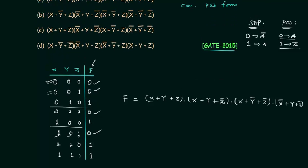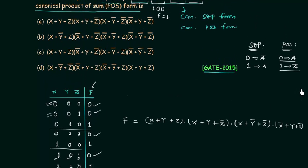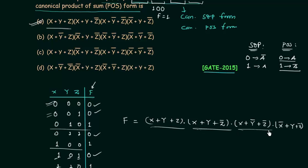Now let's choose the correct option. Option A is the correct option because we have the max terms: (x OR y OR z), (x OR y OR z complement), (x OR y complement OR z complement), and (x complement OR y OR z complement). So option A is the correct answer for the second problem.